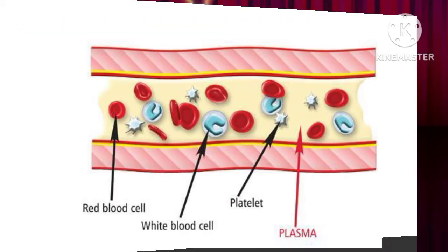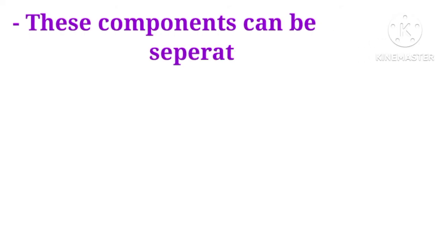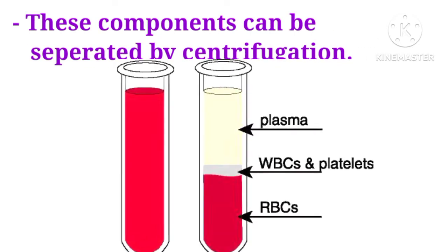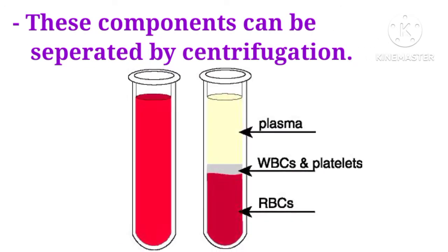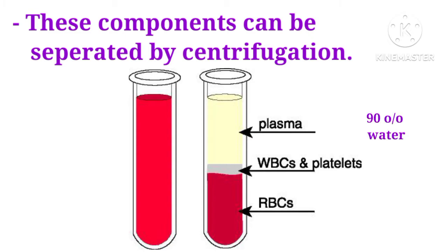These components are separated by centrifugation. In centrifugation, blood is rotated at high speed and then allowed to settle. The lighter components rise to the top and the heavier parts settle at the bottom.